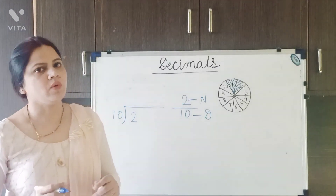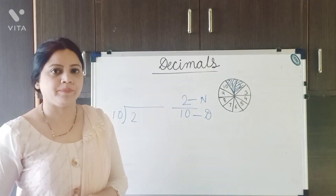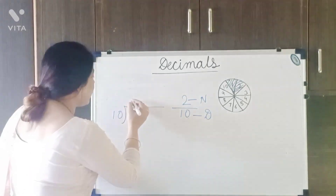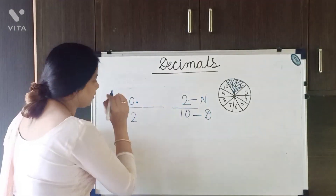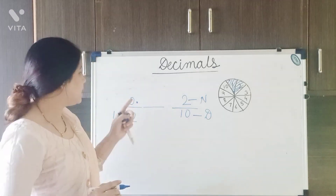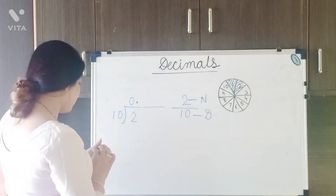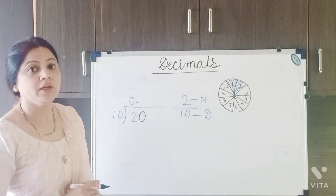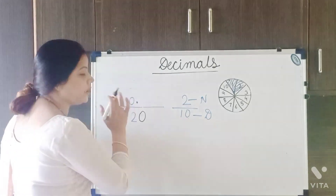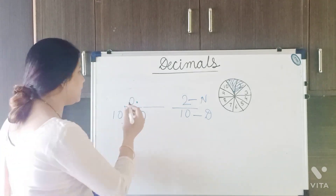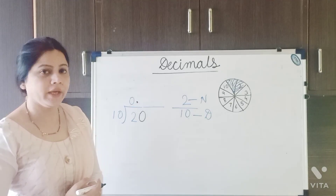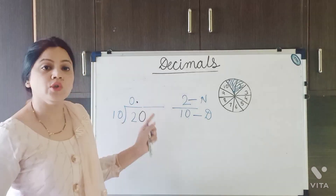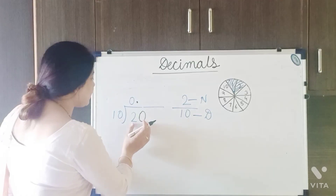It is not possible. So how can we do that? There is one way. If the dividend is smaller than the divisor, we have to give 0 and a decimal point in the quotient. Once we give 0 and the decimal point, we can add a 0 to the dividend. So the dividend becomes 20.